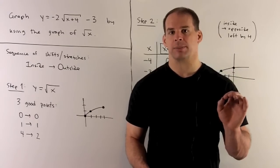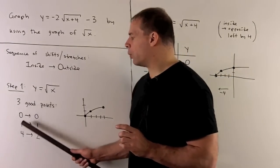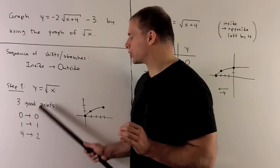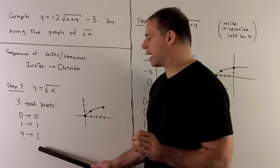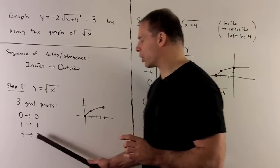So y equals square root of x. I'll pick three good numbers: 0, 1, and 4. We'll plug in square root of x, which is going to give me my y values. So the points 0,0; 1,1; and 4,2.